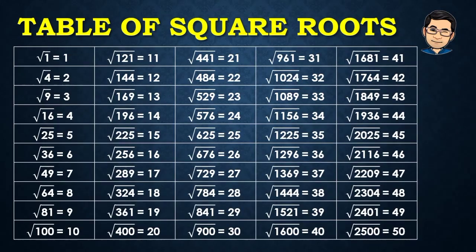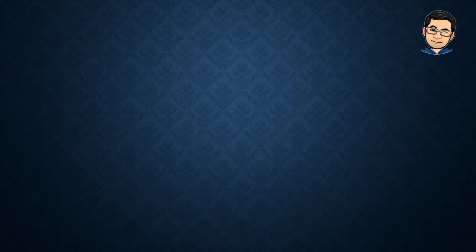As a guide for square roots, here are the perfect squares from 1 to 50 shown in the presentation. Square root of 1 equals 1, square root of 4 equals 2, and so on up to square root of 2,500 equals 50. It is important to know our perfect squares so we don't struggle when solving.